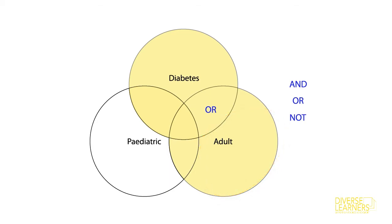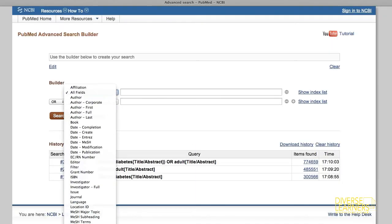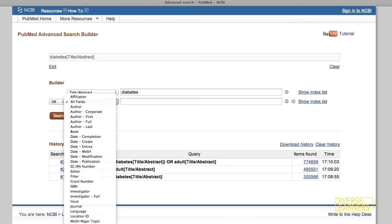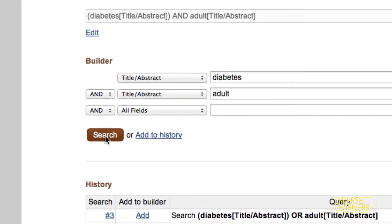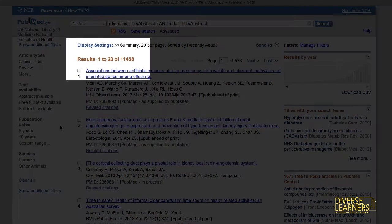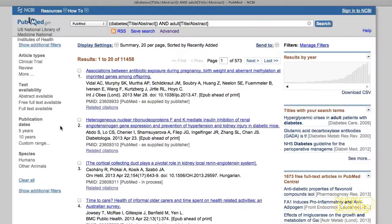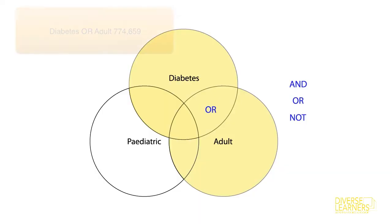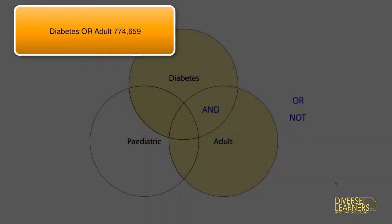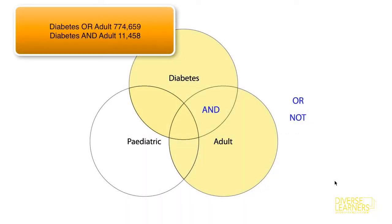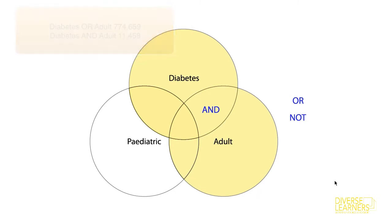But there'd be a whole lot of other literature in there relating to adults and other conditions besides diabetes. We don't want that. We want our search to be more specific. So to make our search more specific, we'll use the Boolean operator AND. We'll do this by searching for diabetes AND ADULT. Watch what happens to the number of search results — the number drops. We've now asked the database to find any literature or journal articles that contain both the keyword diabetes AND ADULT.